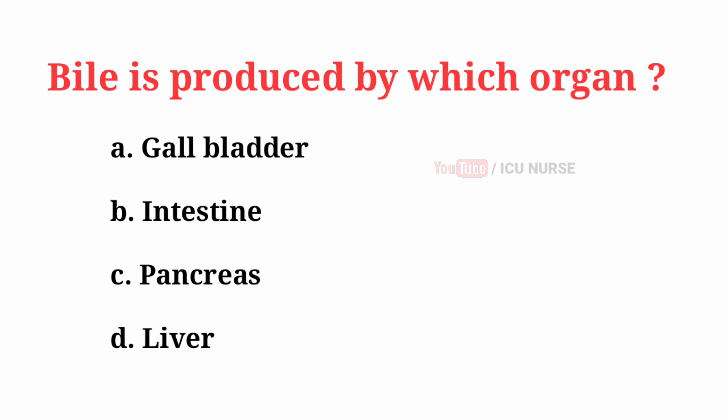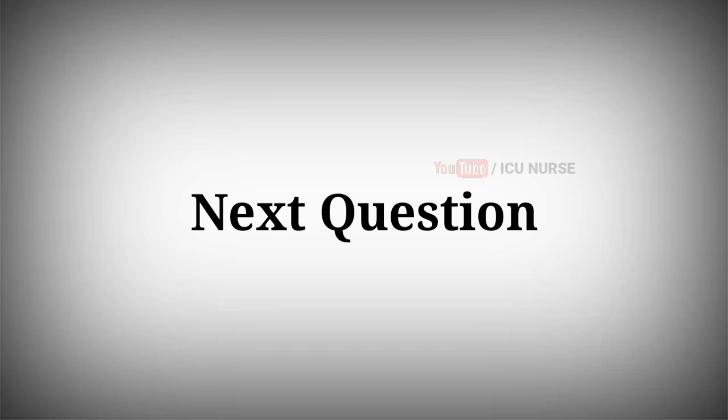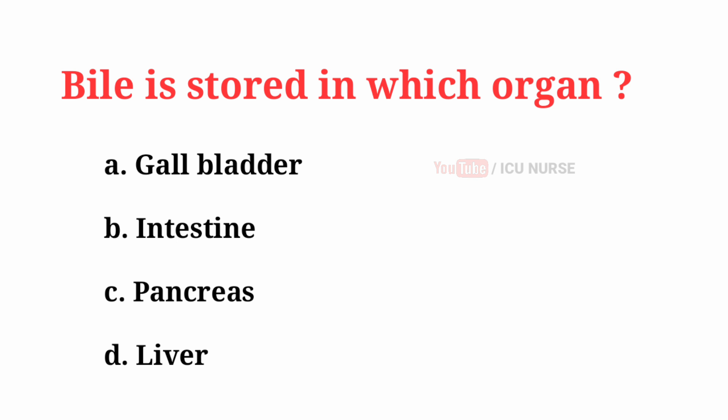Bile is produced by which organ? The correct answer is D: Liver. Bile is stored in which organ? The correct answer is A: Gallbladder.